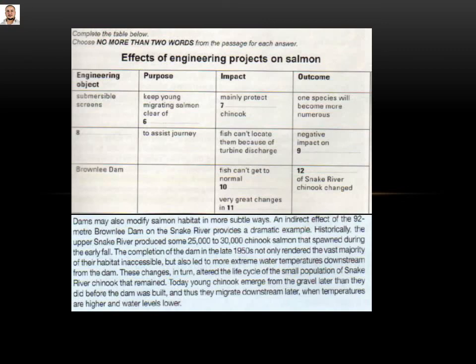Let me repeat the answers: number six — turbines; number seven — stream type; number eight — fish ladders; number nine — migration rates; number ten — habitat; number eleven — water temperatures; and number twelve — life cycle. Thanks for watching this lecture. I hope you got the benefit of it. Please press the subscribe button, and if you have any questions or criticism, write them in the comments. Thank you very much. It was Ms. Haidalkassi with you.